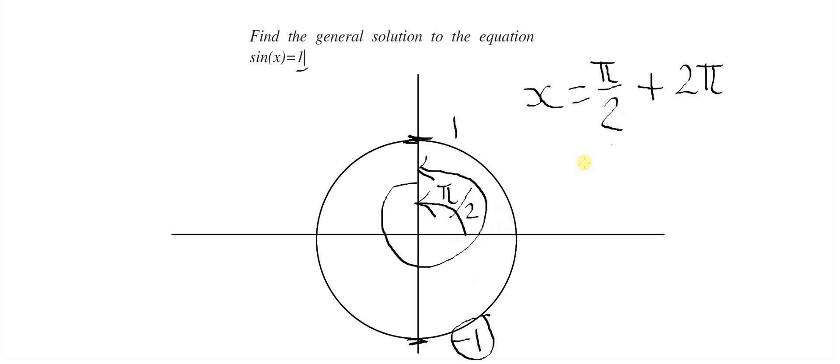You end up in the same position at the unit circle. So we write a general solution like this: we have a solution in the first revolution plus 2 pi times n.